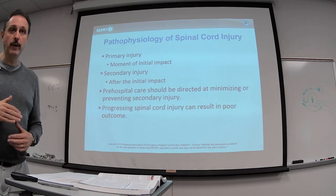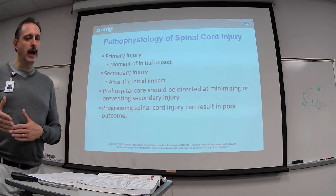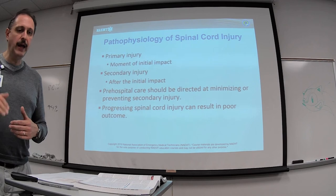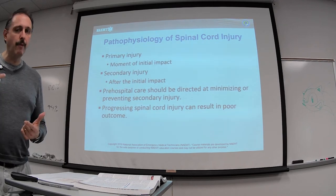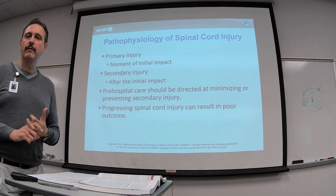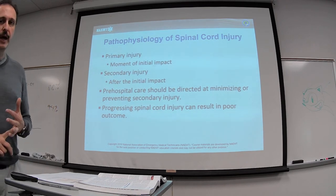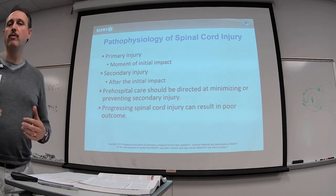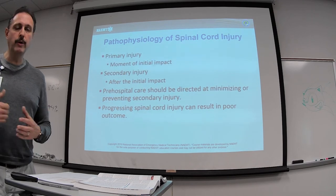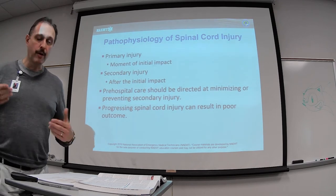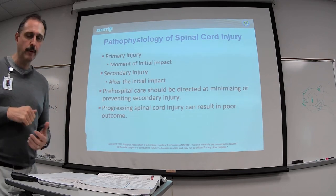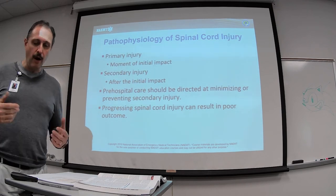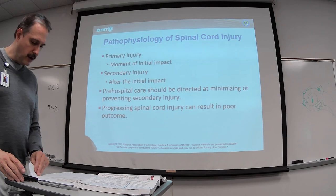What can potentially worsen the patient's outcome is the secondary injury. Take this patient who hit his head on the bottom of the pool — he suffered a spinal cord injury, and now we're looking at whether he has an abrasion, swelling, unequal pupils, abnormal responses, altered consciousness, or a coup-contrecoup injury from striking the front of his head.